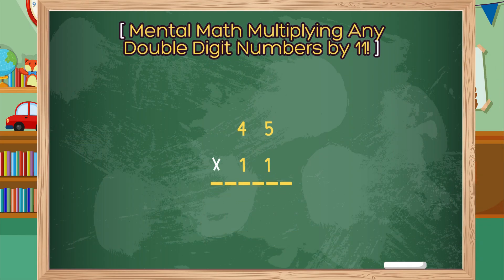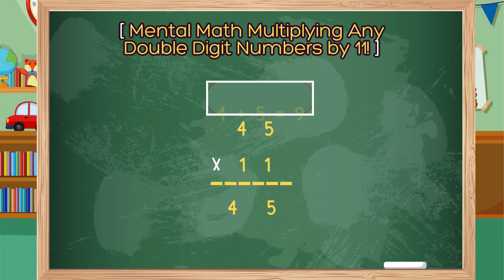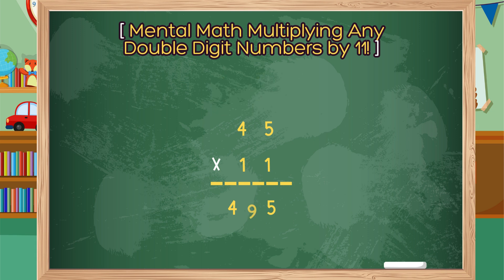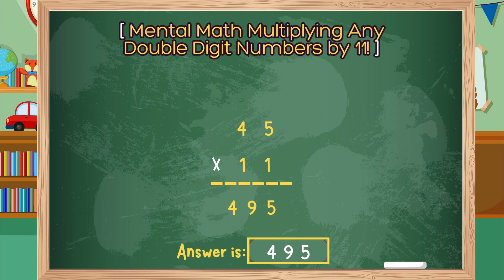45 times 11. Step 1: Separate the digits of 45 and place them in the product area. Step 2: Add the digits 4 and 5 together, which equals 9. Step 3: Insert the 9 into the sum between the 4 and the 5 in the product. Your answer is 495.